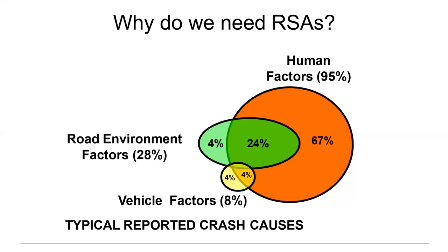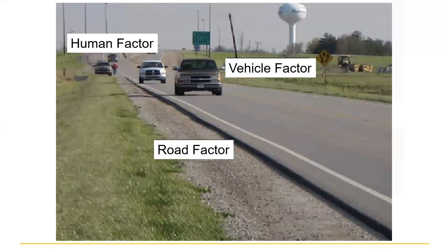Those are the road environment factors and how they play into human factors. There are vehicle factors as well — our vehicles break down or have malfunctions — but that's getting better. Our vehicles are much safer now than they were 40 years ago. What has really changed is humans: people are much more distracted now than they used to be. But as county road departments, city street departments, and DOTs, the part we have the biggest control over is the roadway, and that's what a road safety audit primarily focuses on.